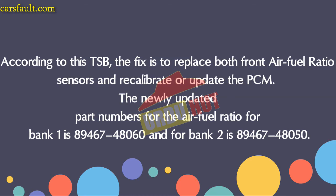According to this TSB, the fix is to replace both front air-fuel ratio sensors and recalibrate or update the PCM. The newly updated part number for the air-fuel ratio sensor for bank one is 89467-24060, and for bank two is 89467-24050.